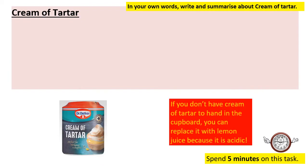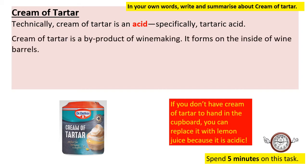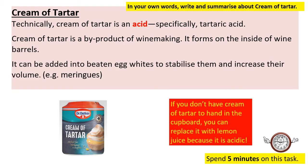Now do the same with cream of tartar. Technically, cream of tartar is an acid — tartaric acid. It is a byproduct of wine making and forms on the inside of wine barrels. It can be added to beaten egg whites to stabilize them and increase their volume, for example in meringues. If you don't have cream of tartar, you can replace it with lemon juice as it is also acidic. In your own words, write and summarize what you understand about cream of tartar — pause here and spend five minutes on the task.